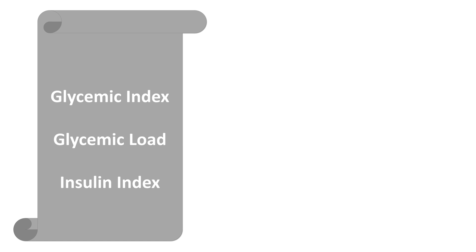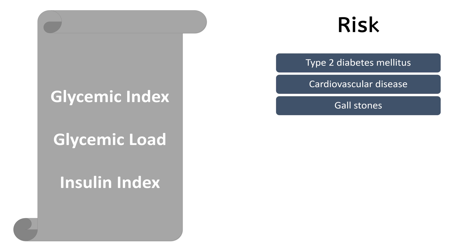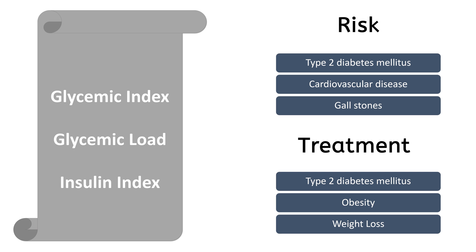Food items with high Glycemic Index and Glycemic Load are a risk factor for the development of type 2 diabetes mellitus, cardiovascular disease, and gallstones. Foods with low Glycemic Index and Glycemic Load are commonly used for the treatment of type 2 diabetes mellitus, obesity, and weight loss.